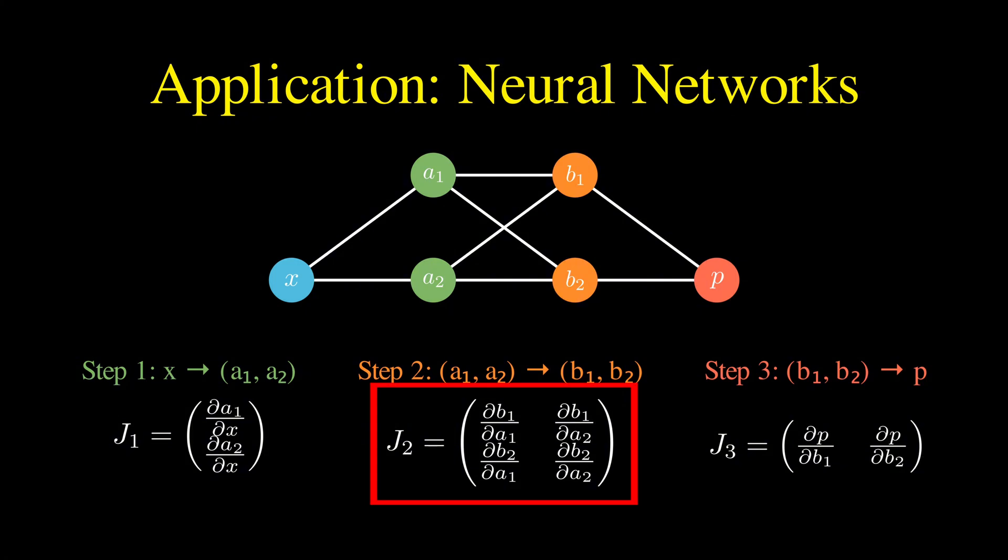The second transformation, from the first hidden layer to the second hidden layer, involves two functions of two variables, yielding a 2 by 2 Jacobian matrix.